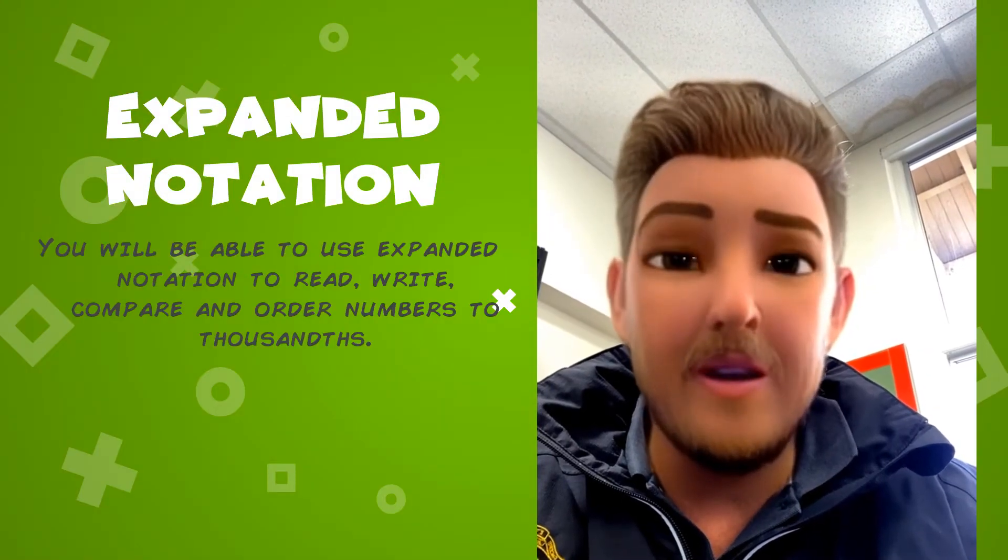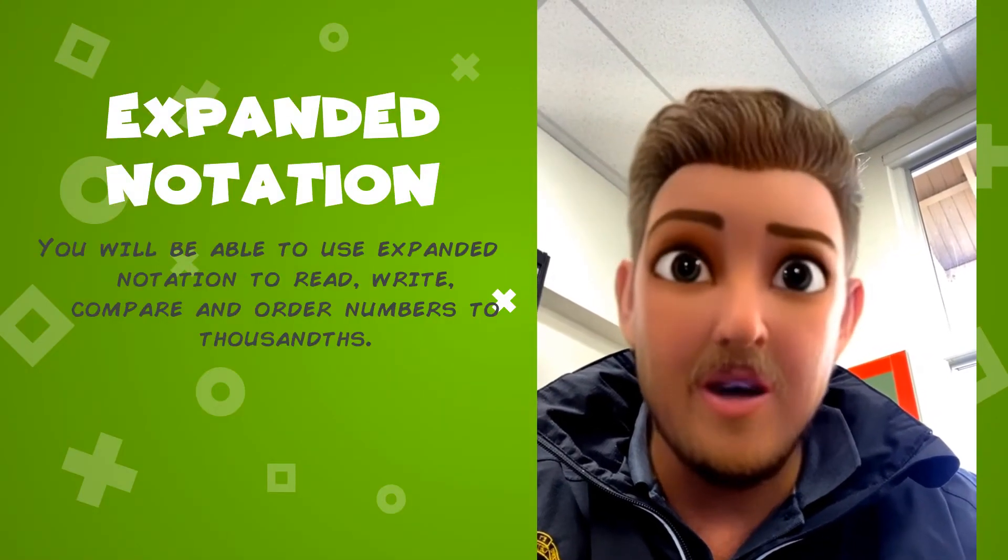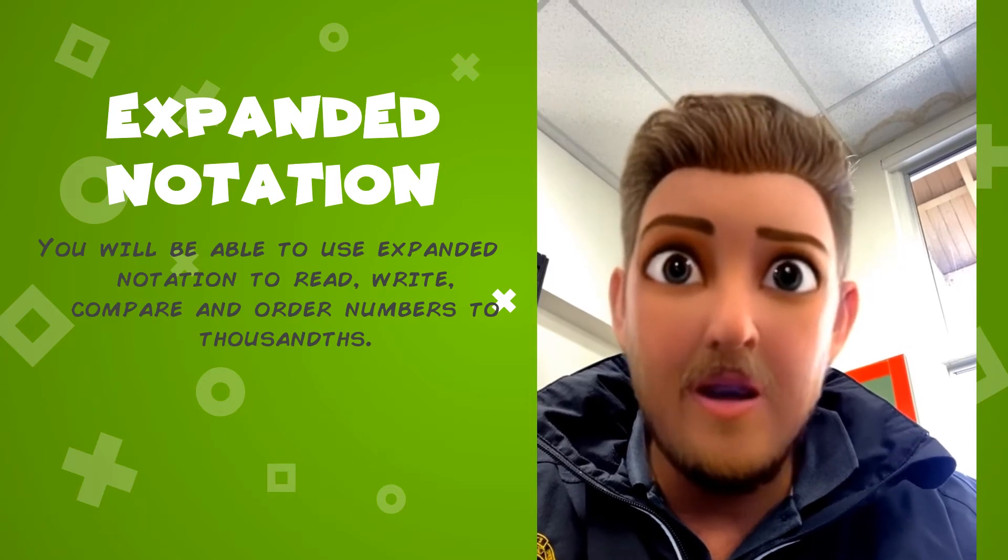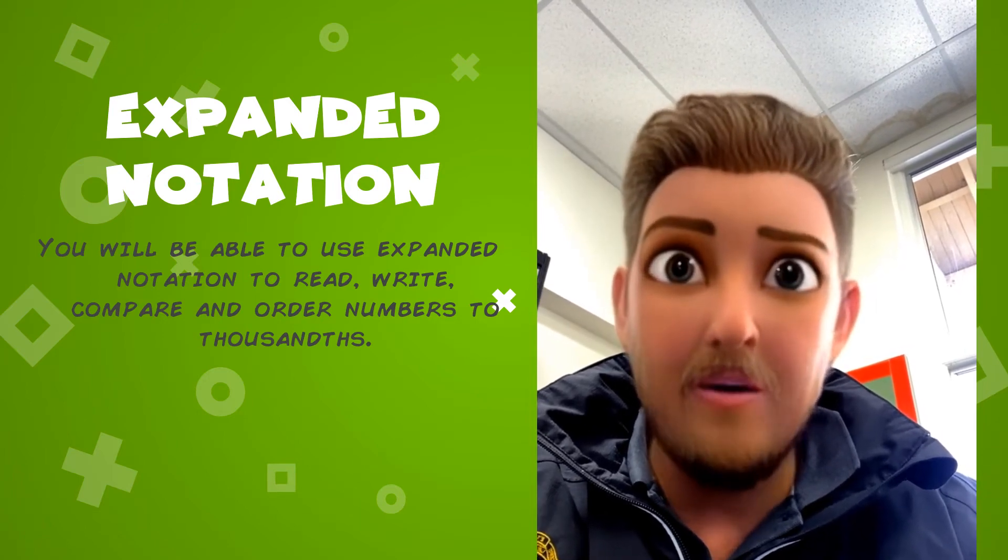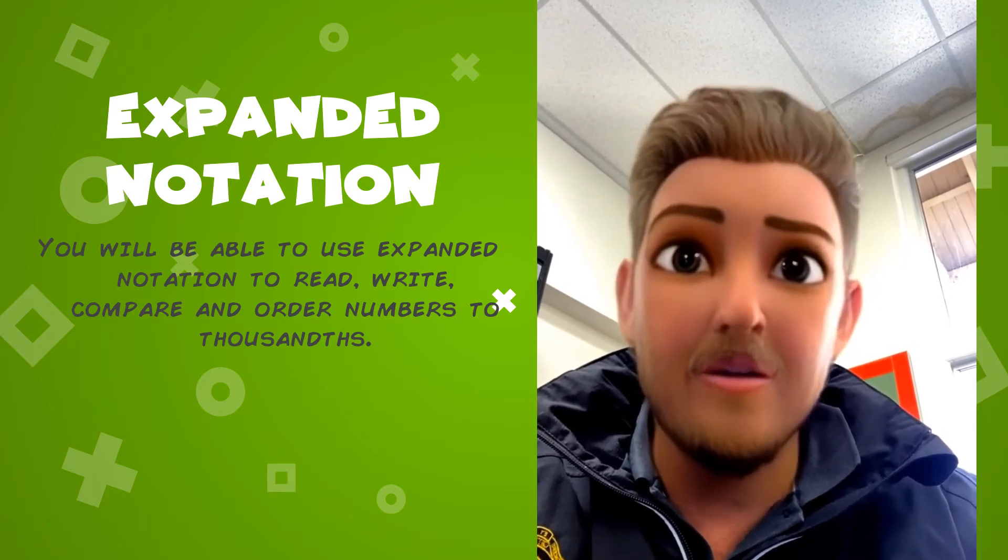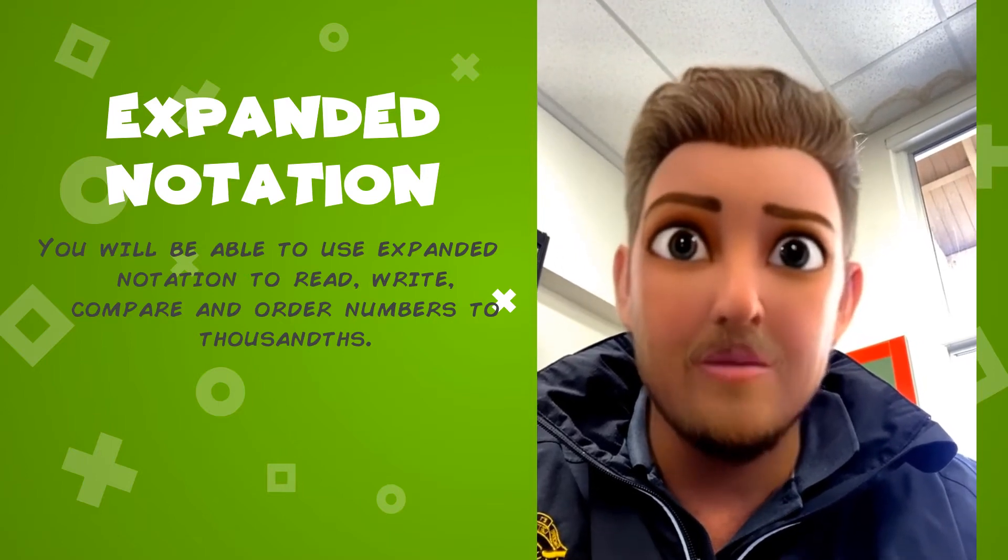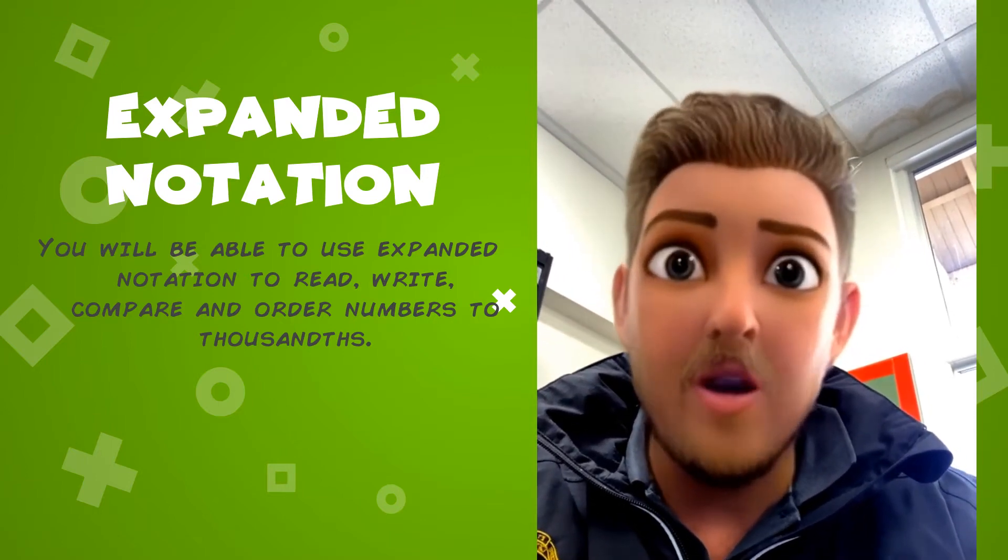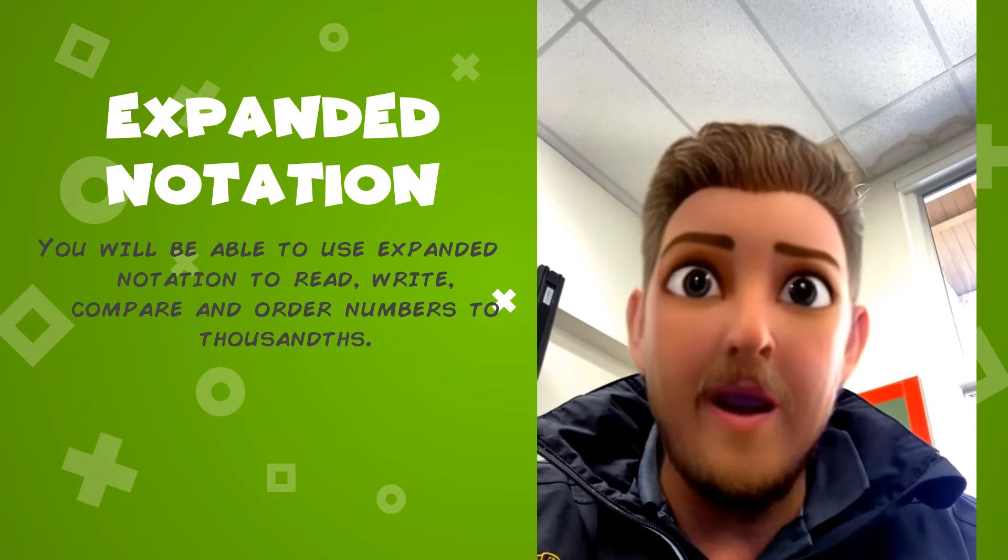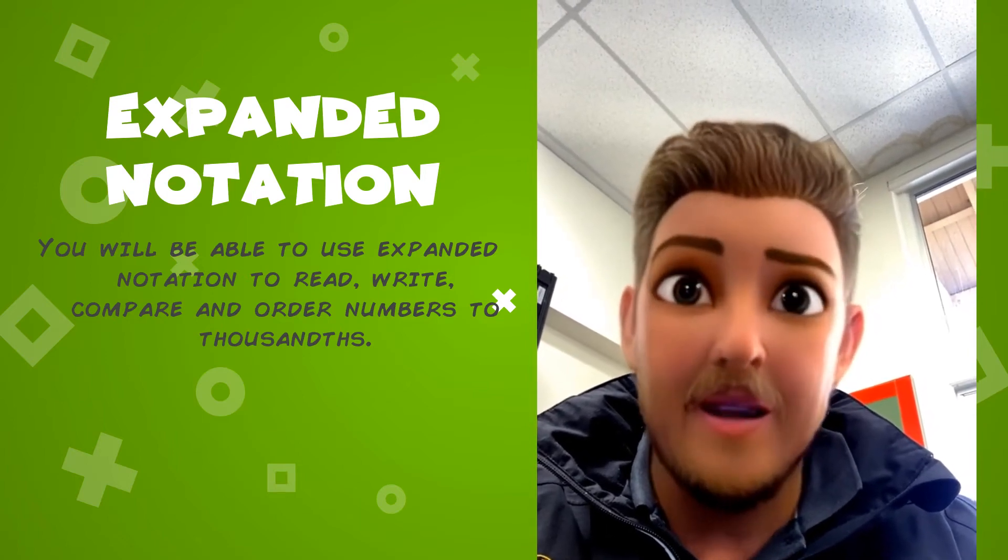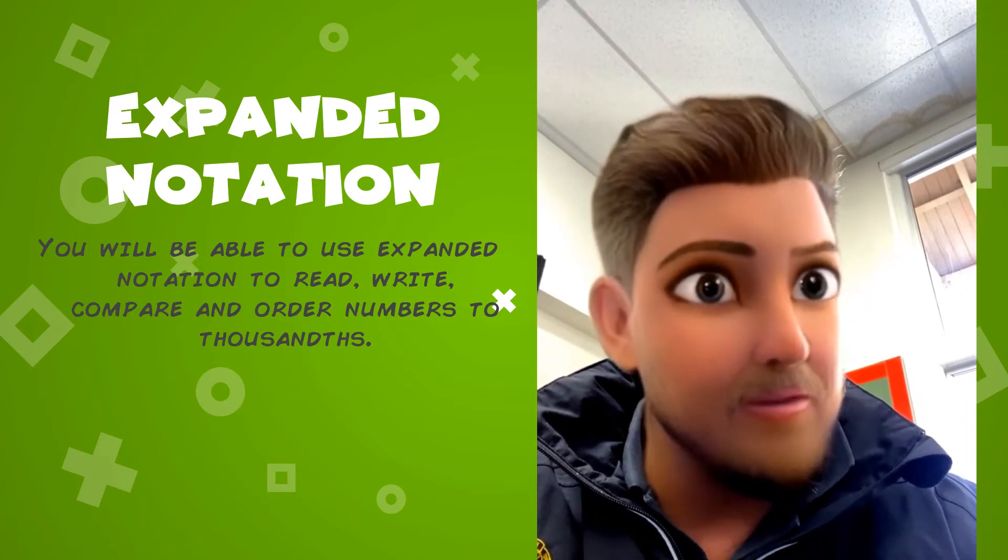Hey Math Legends, we're going to be looking at something called expanded notation, which is where we're going to be writing and reading and comparing and ordering numbers to thousands. This is where we break down a number into little smaller chunks. The reason we need to know this is it's really handy when we're actually counting or dealing with money, and I know everybody here loves a little bit of money.